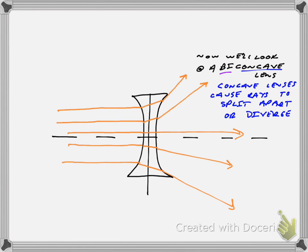Because the rays diverge, we call concave lenses diverging lenses. You might ask whether a diverging lens still has a focal point, since the rays aren't coming together. The answer is yes — the focal point is not where rays converge, but where they appear to have originated from. If you trace the diverging rays backward, they all appear to come from the same point, and that is the focal point of a diverging or concave lens. In the next video on ray diagrams, you'll see this put to practical use.